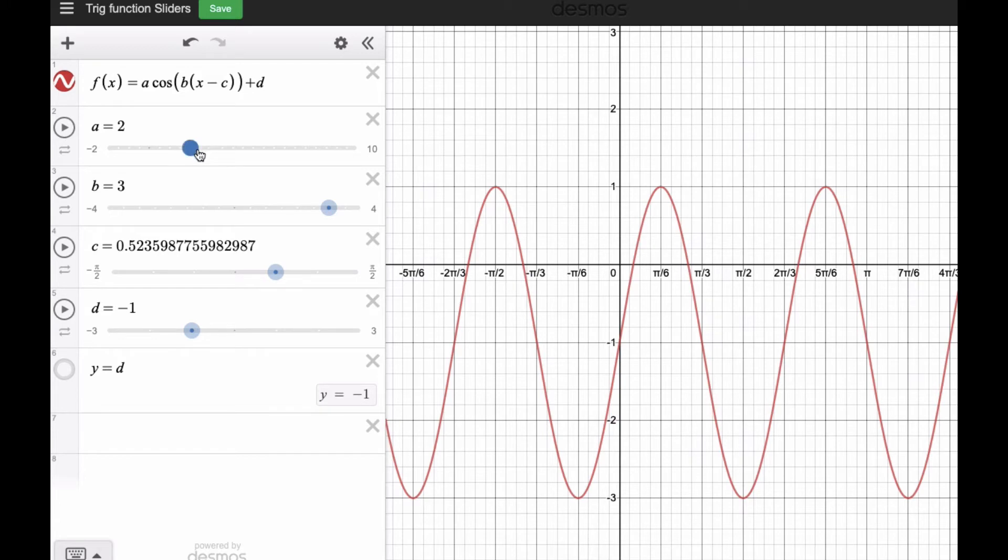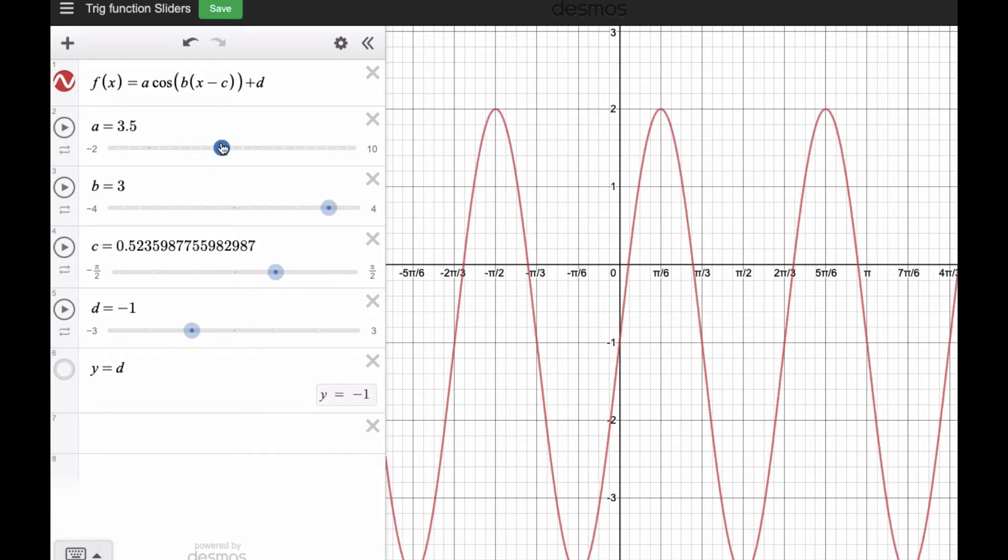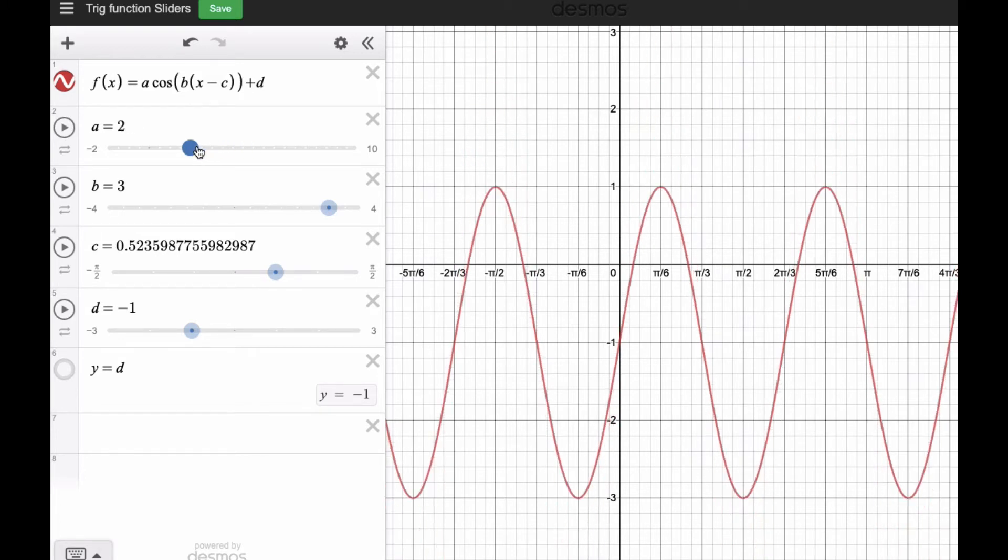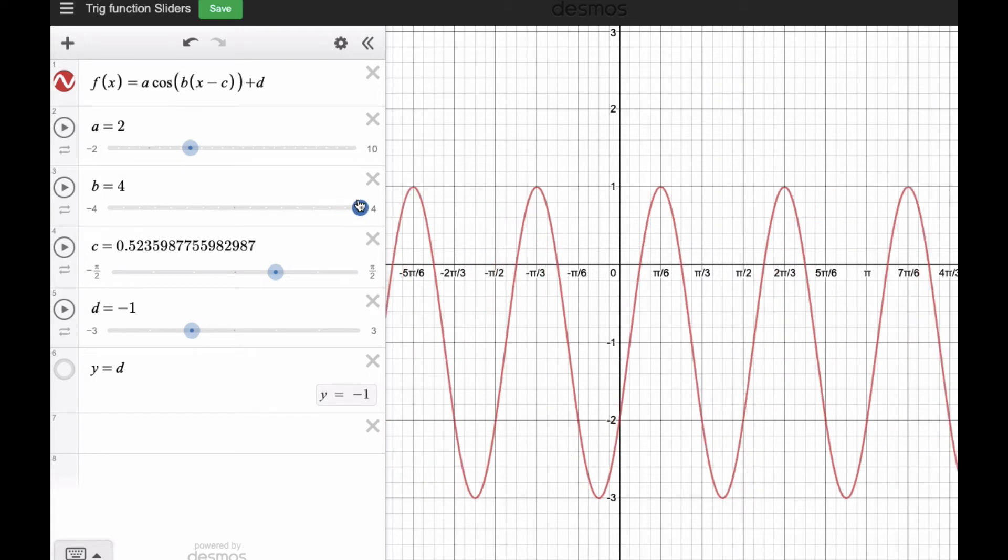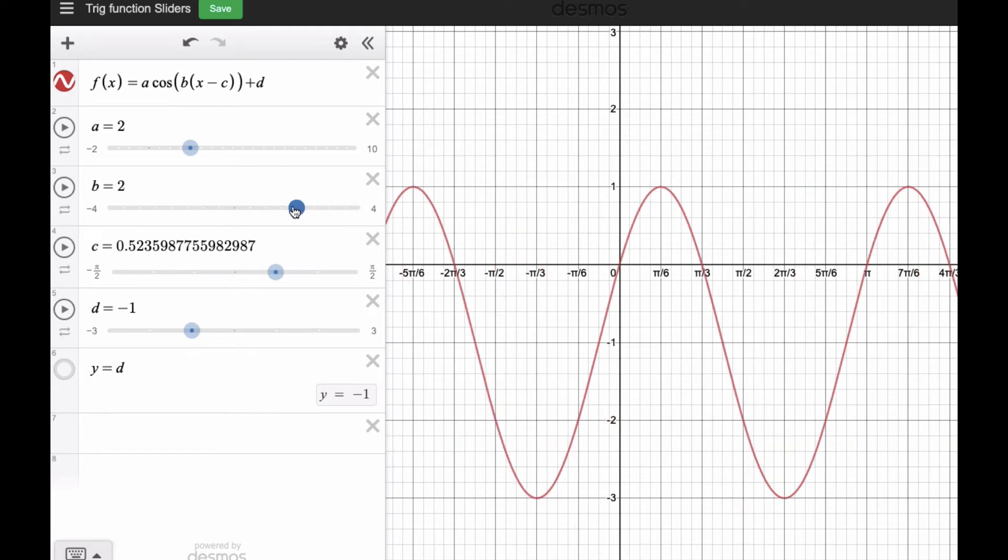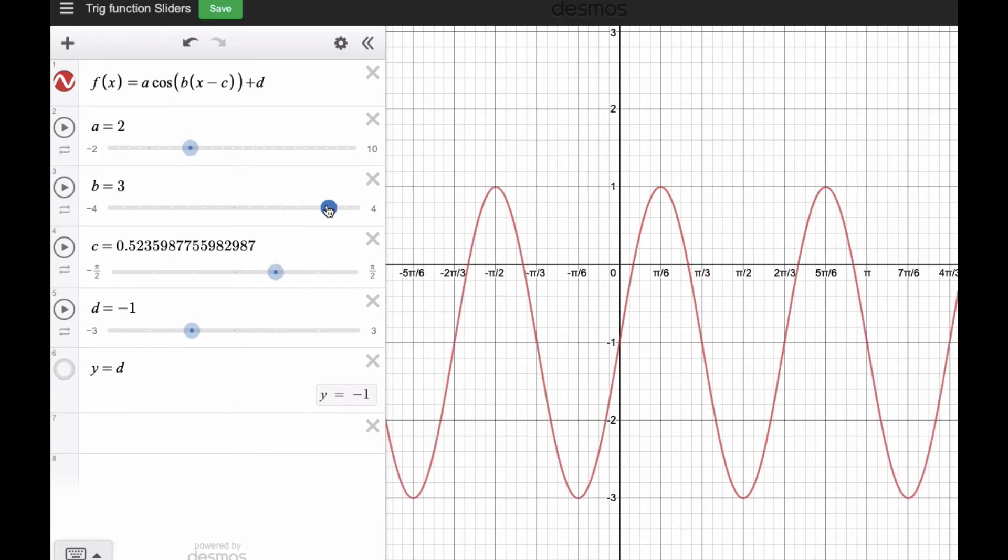And so the a value, again, you can see if I change it, it is a vertical stretch. And so the a value changes. The b value is a horizontal stretch, and so if I make it bigger, if I make this a 4, that means I'm going to divide by, or multiply by a quarter or divide by 4, which in essence will bring it closer, tighter. So if I go away from 3, it makes it wider.